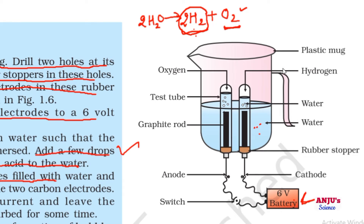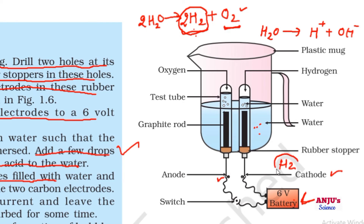Which gas is on which electrode? This electrode is the anode and this is the cathode. The H₂O molecule decomposes into H⁺ and OH⁻. Since H⁺ is positive in nature, it decomposes at the cathode, so hydrogen gas evolves at the cathode. The negative ion evolves at the anode, so oxygen is evolved at the anode. Therefore, the volume of hydrogen is double that of oxygen, and we can see the difference at both electrodes.